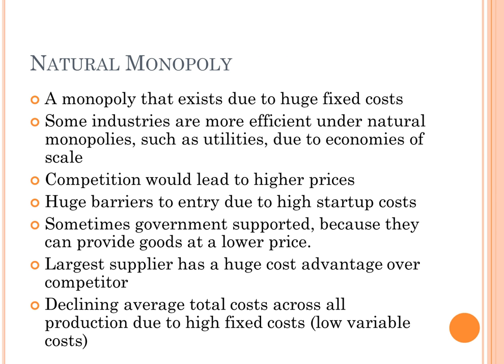Natural monopolies are a special type of monopoly. They usually exist in industries where fixed costs are extremely high. In these industries, it's usually more efficient to produce under one company because it can truly maximize its economies of scale. These are industries such as electrical utilities — in an electrical utility industry, you need to build a lot of power generators. If you have many firms, each will want to build its own generators, which is extremely expensive. However, if you have one firm, it can build one power generator and hook more people up to it, which is very cheap. Having lots of firms is therefore inefficient, as prices will be higher than under a single monopoly. These high costs lead to high barriers of entry, so competition is scarce. The government will sometimes choose to support natural monopolies due to their increased efficiency, and the natural monopoly will also have a huge cost advantage over competitors because of its huge size.